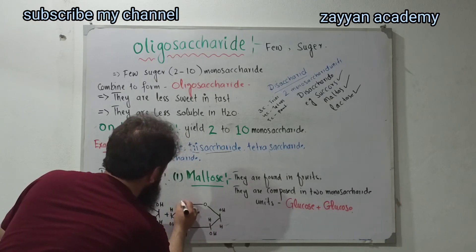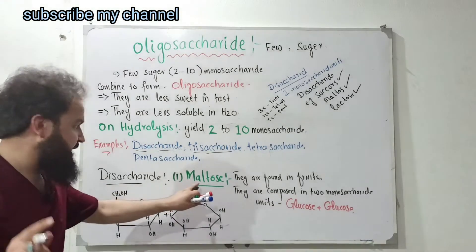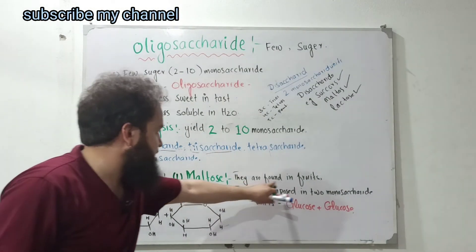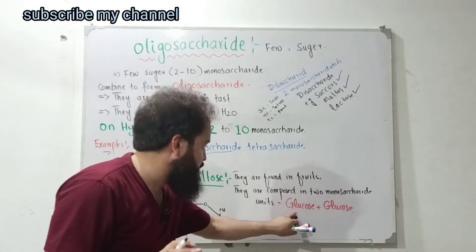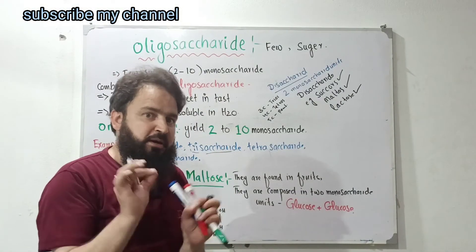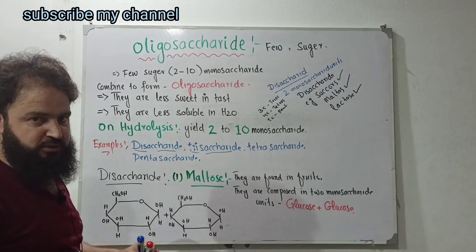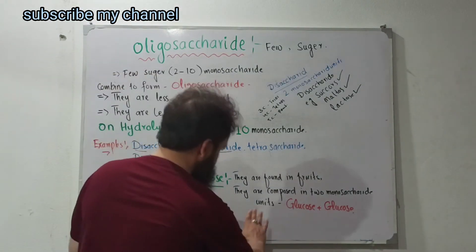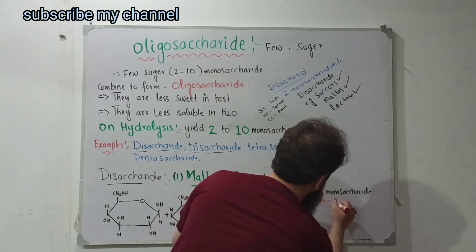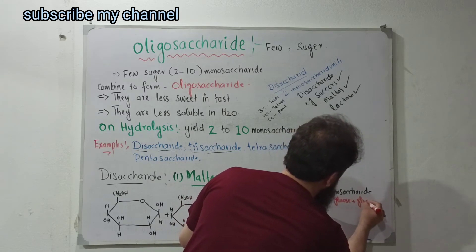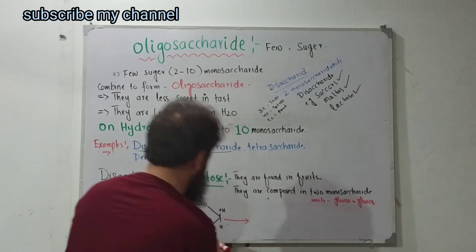Disaccharide number 1 — Maltose. They are found in fruits. They are composed of 2 monosaccharide units. All units are glucose plus glucose, combined with a glycosidic bond. That is Maltose.